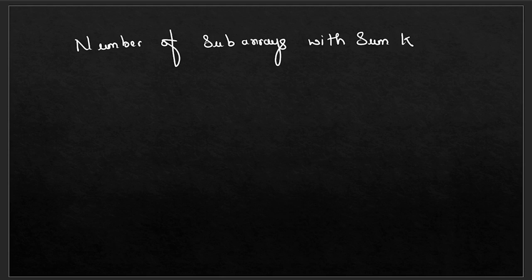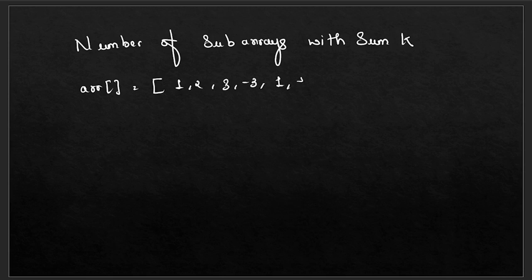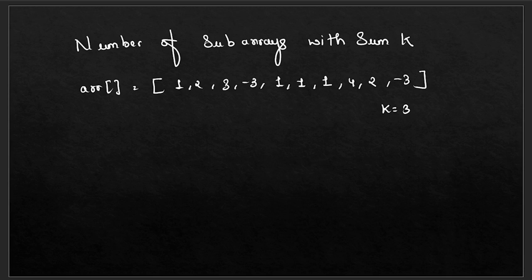Let's understand the problem now. We are given an array: 1, 2, 3, -3, 1, 1, 1, 4, 2, -3. The k value here is 3. We have to find subarrays where the sum equals k.